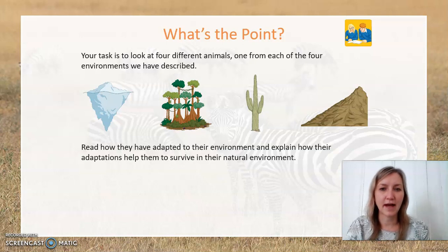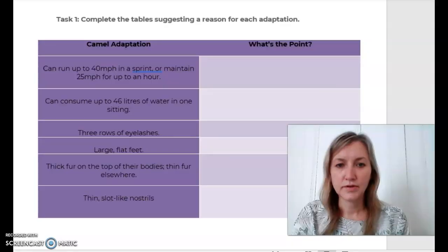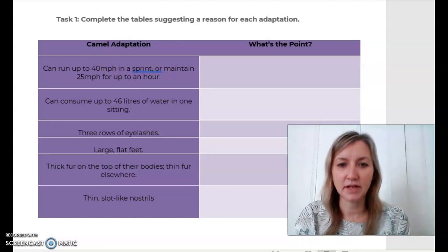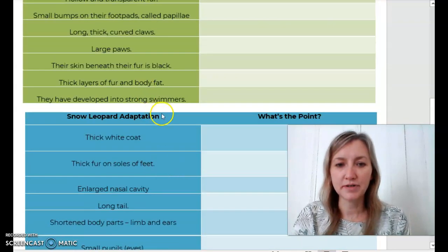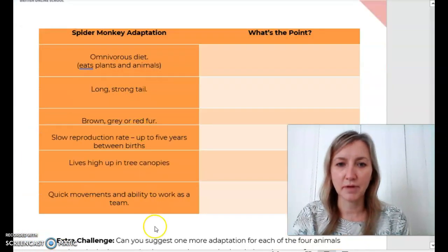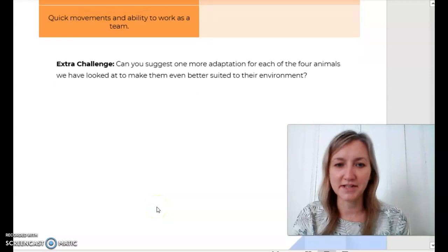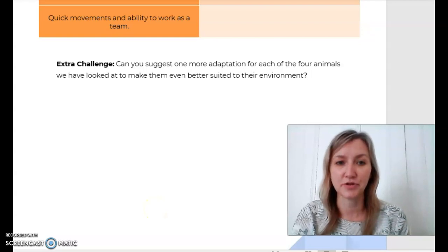On the worksheet, you will see four different animals, one from each of the four environments described. You're going to look at how they've adapted to their environment and think of an explanation for each adaptation and why it helps them to survive in their natural environment. The four animals are: a camel in a desert environment, a polar bear in the polar region, a snow leopard in the mountainous region, and a spider monkey in the rainforest region. If you complete all that within lesson time, your extra challenge is to suggest one more adaptation for each of the four animals to make them even better suited to their environment.